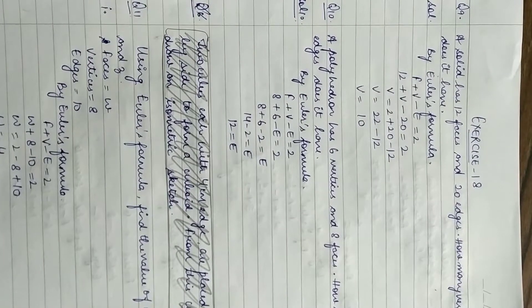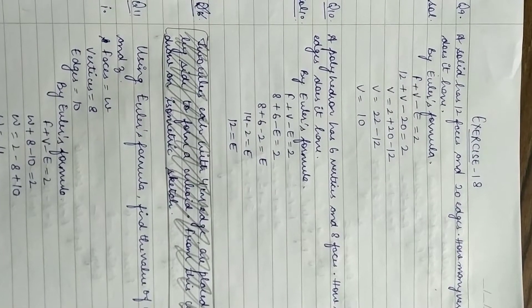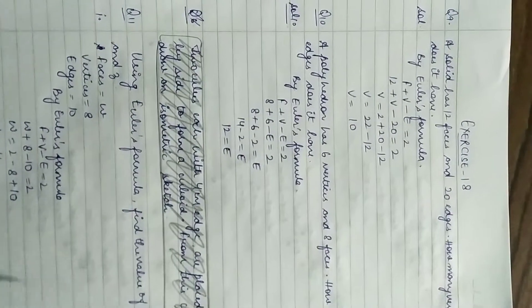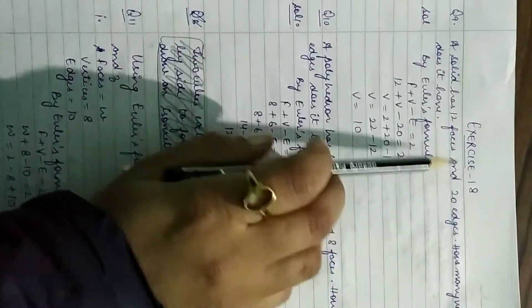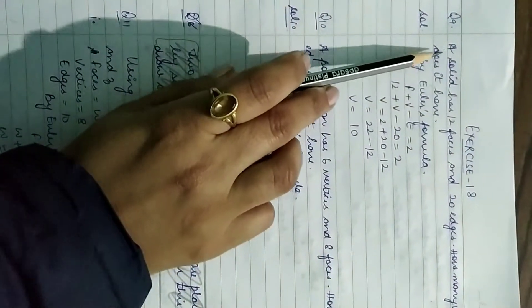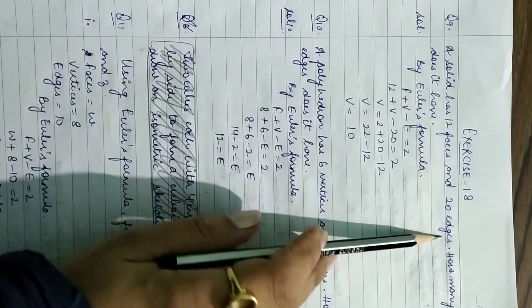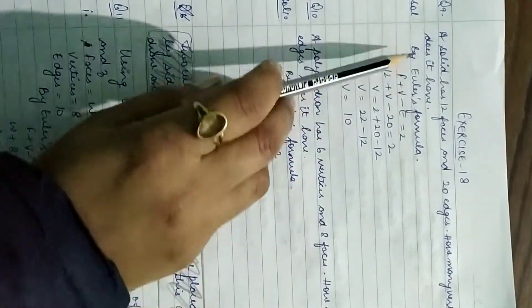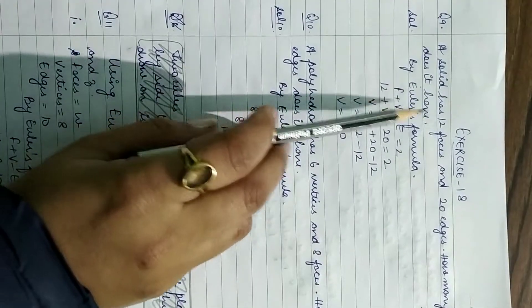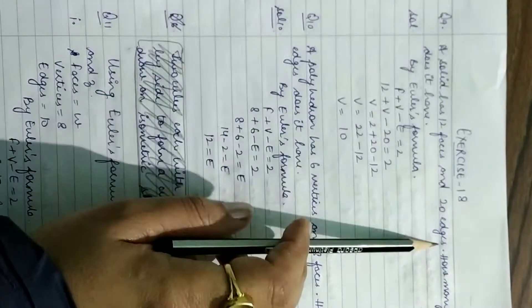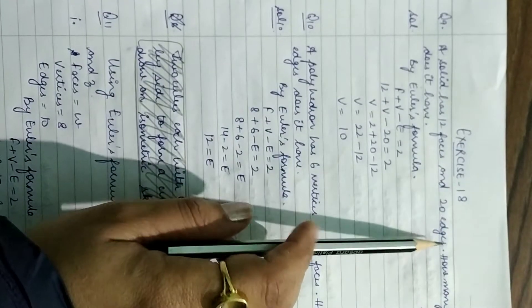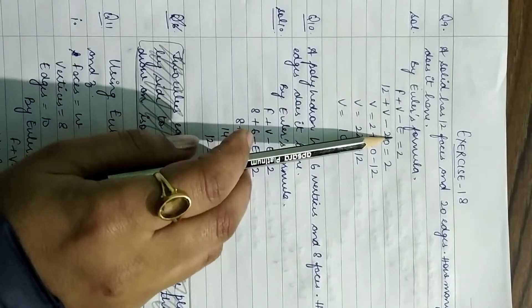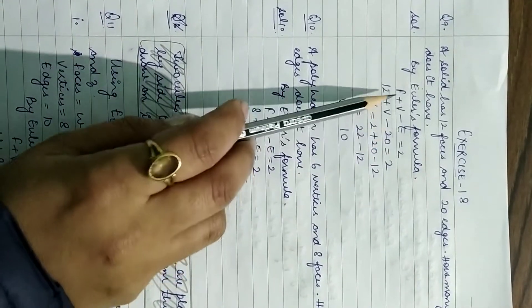Hello children, today in this video we will do the remaining questions of Exercise 18. Question 9: a solid has 12 faces and 20 edges — how many vertices does it have? Whenever two of the three values are given, we use Euler's formula.